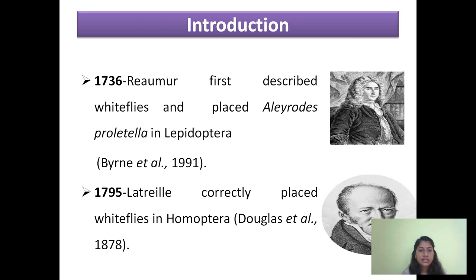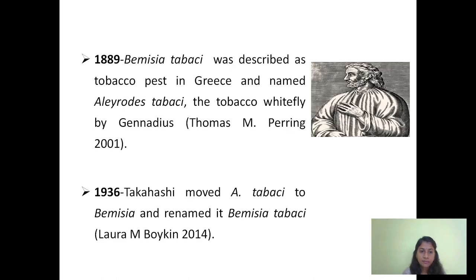The first person who described whiteflies was Reaumur. He described it as Aleurodes proletella in the year 1736, but he mistakenly placed them in the order Lepidoptera. Later, they were correctly placed in the order Homoptera in 1795. Then in the year 1889, Bemisia tabaci was described by Gennadius, who named it Aleurodes tabaci, found on tobacco crop in Greece.